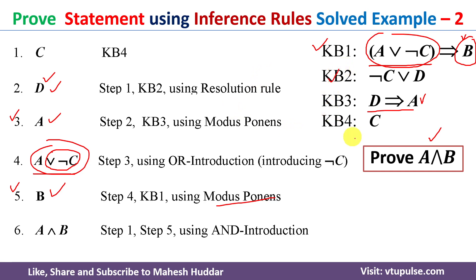What we did here is apply a set of inference rules on the given knowledge bases to arrive at the conclusion. This is not the only approach — we can apply a different set of inference rules to reach the same conclusion. I have shown one valid set of inference rules with which we are able to prove A ∧ B.